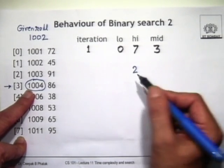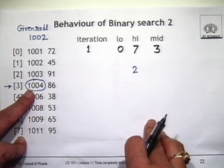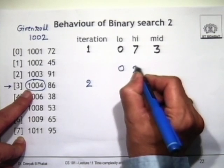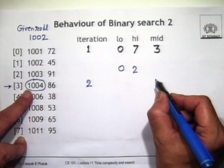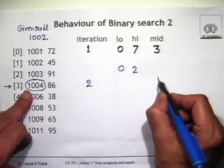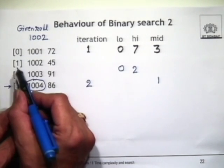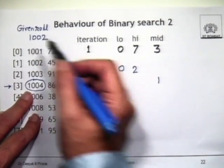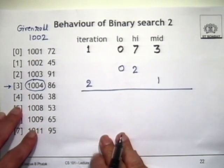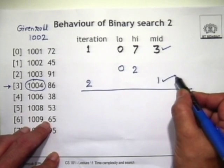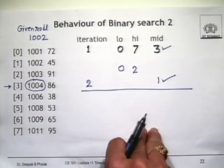High will be set to 2 because mid is 3. The next else statement does not apply. So I go back for the next iteration — iteration number 2 — with low equal to 0 and high equal to 2. The midpoint is 2 plus 0 by 2, which is 1. Is roll[mid] equal to given roll? Roll at index 1 is 1002. Given roll is 1002. You have found it! The algorithm terminates. How many comparisons were made? Just two comparisons for an 8-element array — whereas in the worst case you would have made 8, and on average 4 comparisons. Clearly the number of comparisons has reduced.